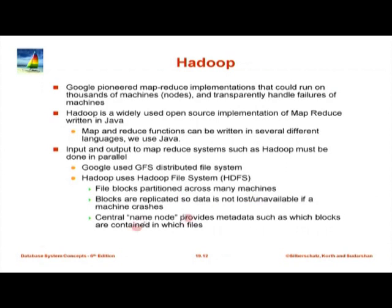In HDFS, data is replicated and there is a central name node which provides metadata. If you want to open a file, you talk to the name node, which will tell you which blocks are contained in the file and where it is replicated. The name node is central — if it fails, you are in trouble. So HDFS keeps a replica of the name node which is kept up to date and has all the data that the live replica has. If the live name node crashes, the backup replica can take over.